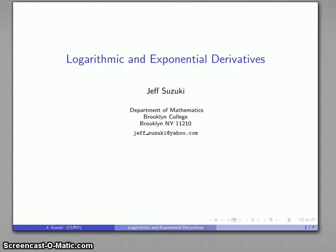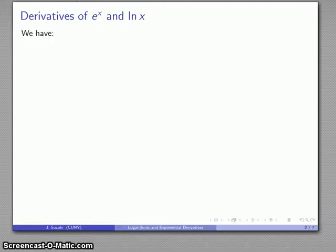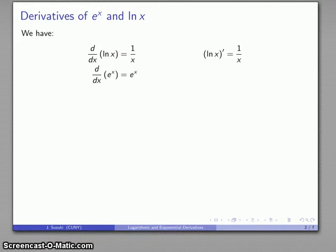Let's look at the derivatives of logarithmic and exponential functions. Our two key functions are e to the x and log of x. The derivative of log is 1 over x — in prime notation, meaning exactly the same thing. And for e to the x, this is the world's simplest derivative: the derivative of e to the x is e to the x. In prime notation, e to the x prime is the same as e to the x.